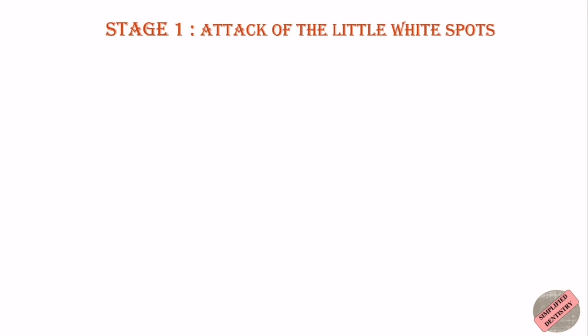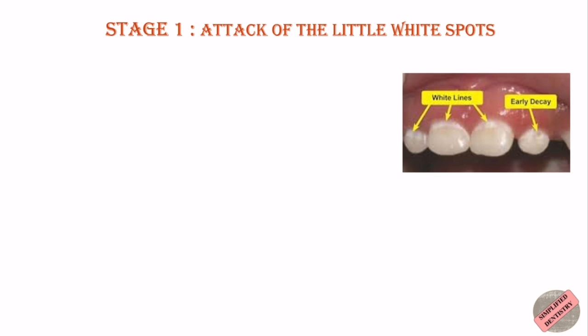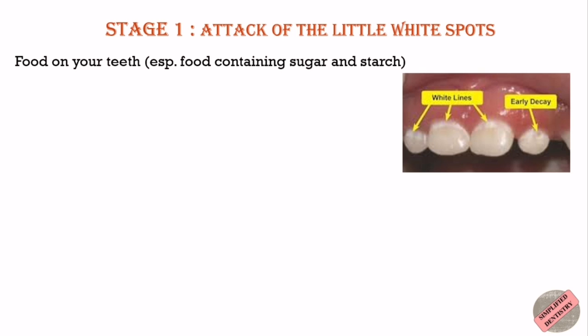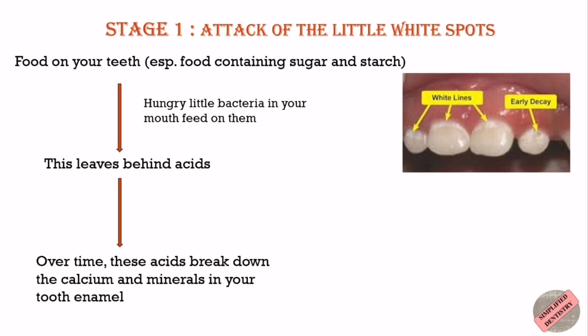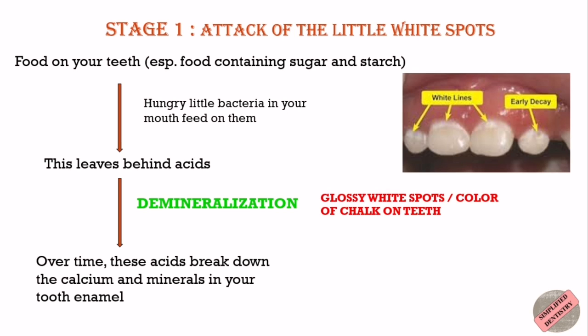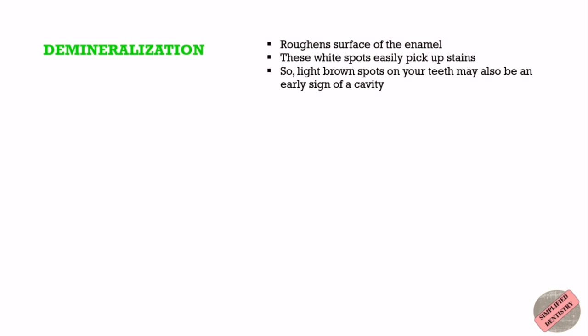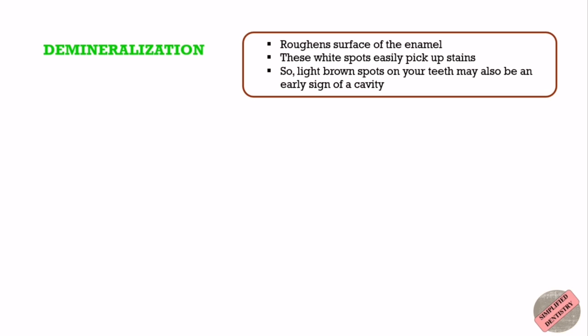Stage 1 is the attack of the little white spots. Sometimes it's very difficult to spot the first sign of a cavity with the naked eye. Often these spots are chalky white in color. When you leave food on your teeth, especially food containing sugar and starch, the hungry little bacteria in your mouth feed on them. Over time, these acids break down the calcium and minerals in your tooth enamel through a process called demineralization. If you see glossy white spots or the color of chalk on your teeth, this is probably a sign of demineralization. Demineralization roughens the surface of your enamel, so you might also notice these white spots easily pick up stains.